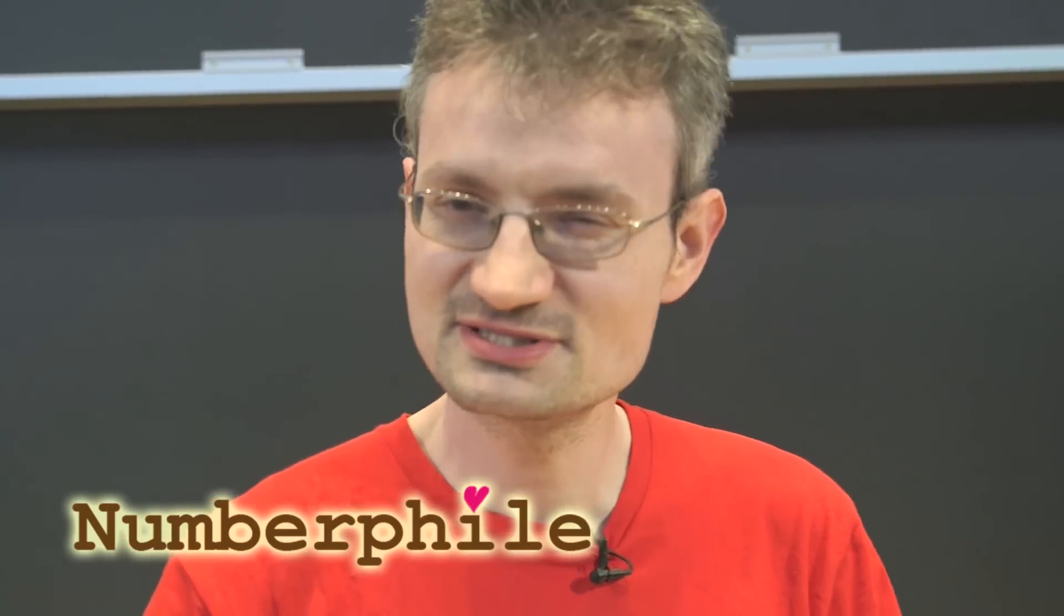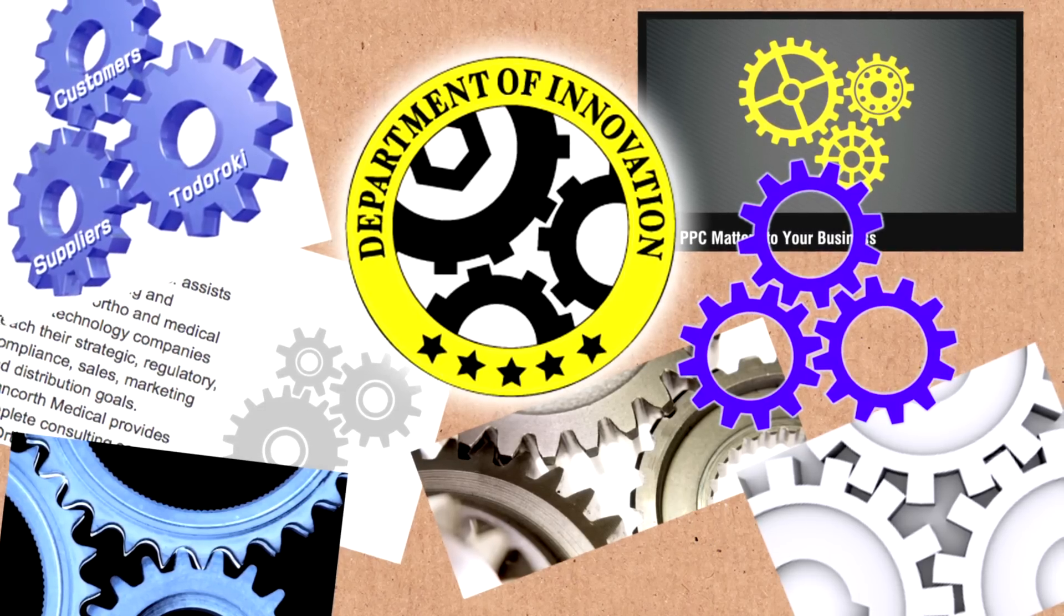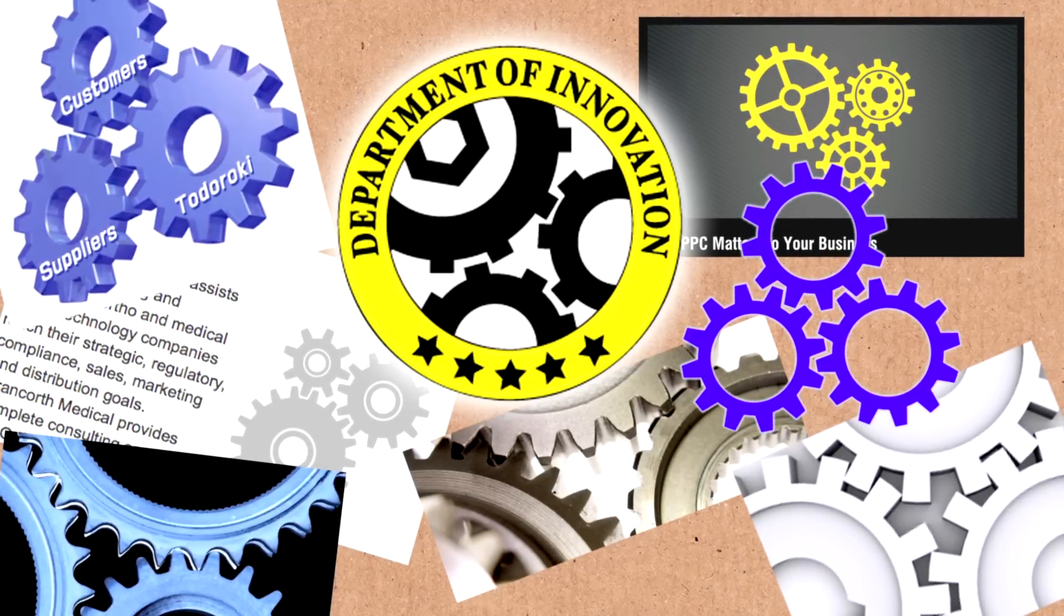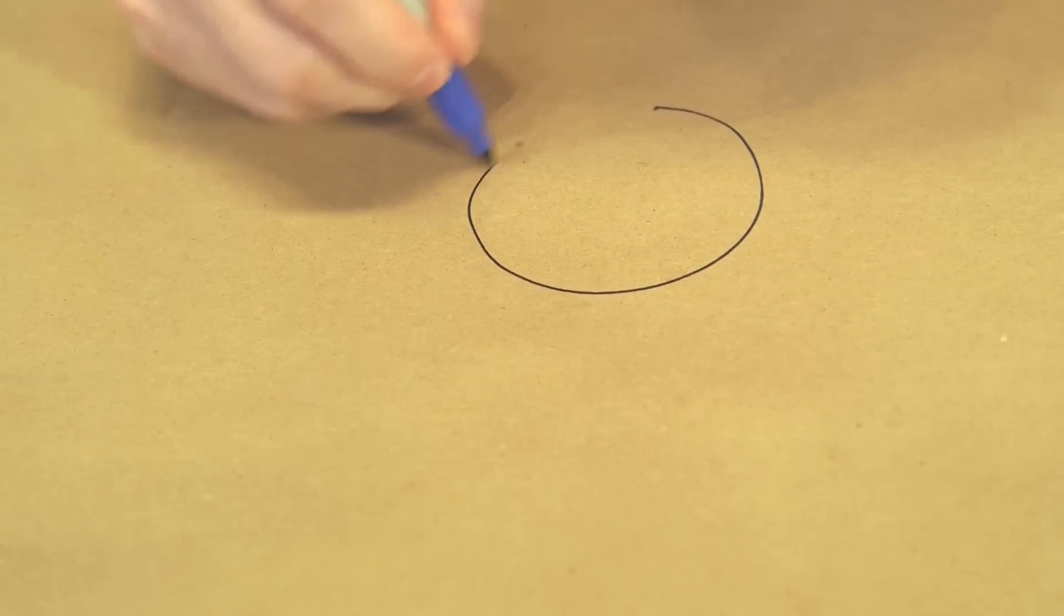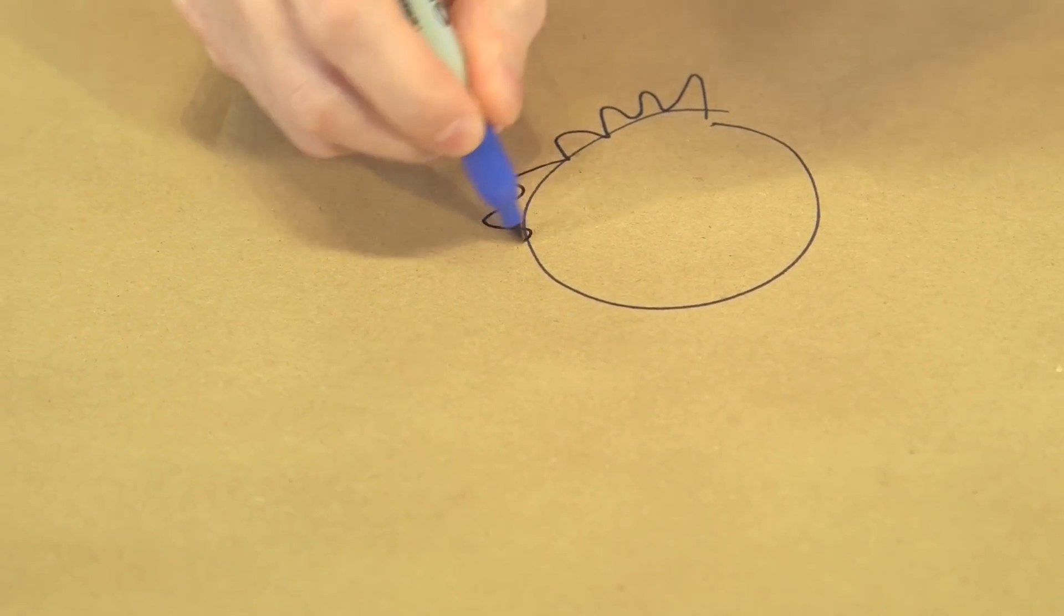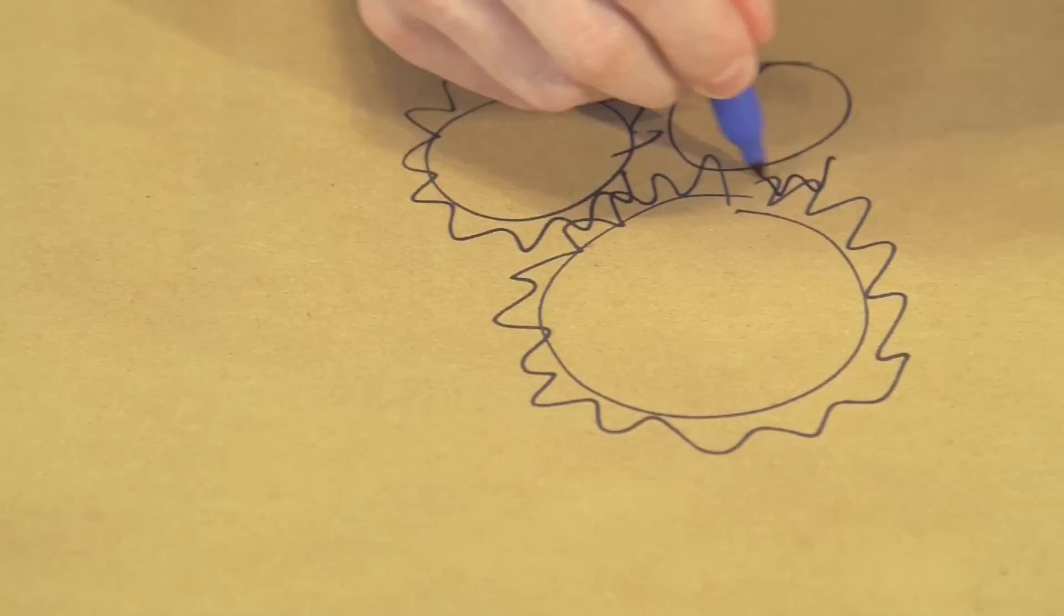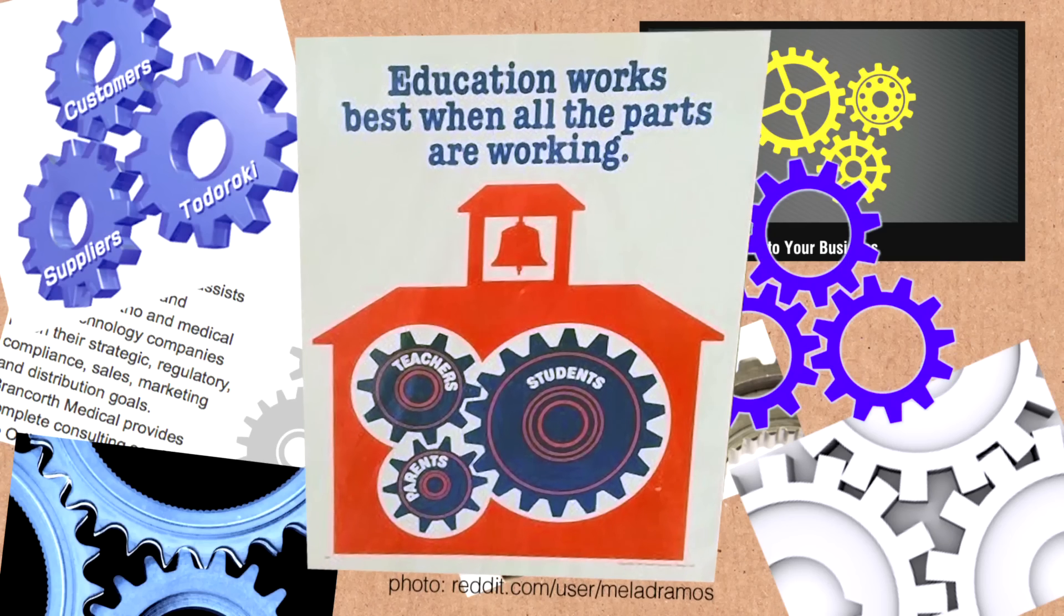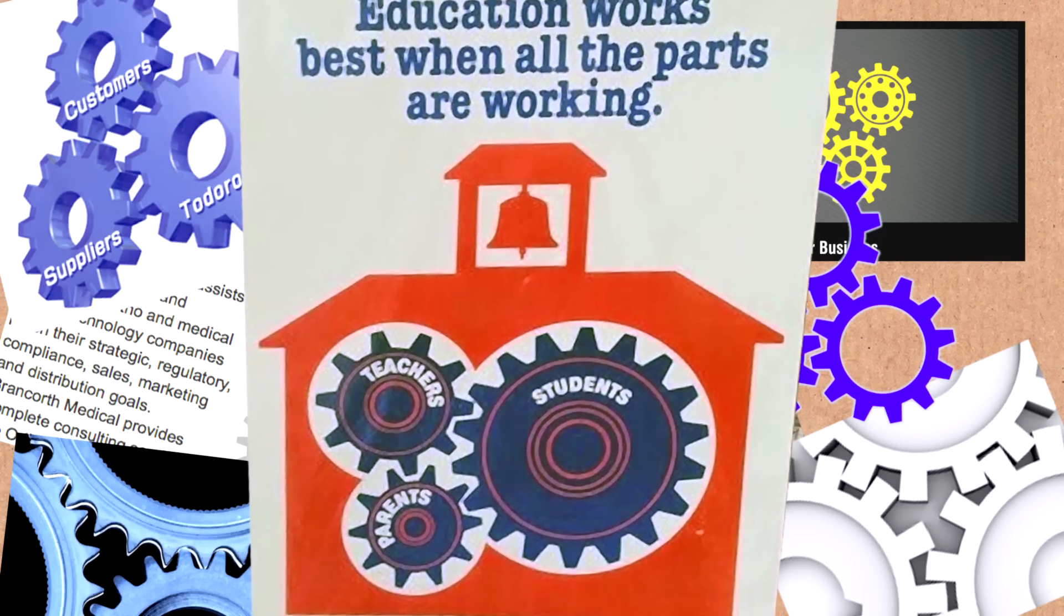Sometimes you see, once you've spotted this you see it everywhere, in graphic design you'll sometimes see a design with three or more gears that are supposed to be meshing together. I'll draw just sort of wheels like this, but they're supposed to have teeth. And then there'll be another one here and another one here. This is supposed to be three things that are working together. The students and the teacher and the parents all come together to make the school work fantastically or whatever it is.